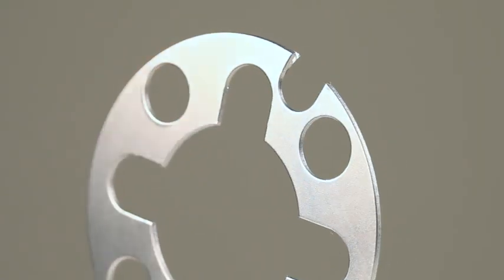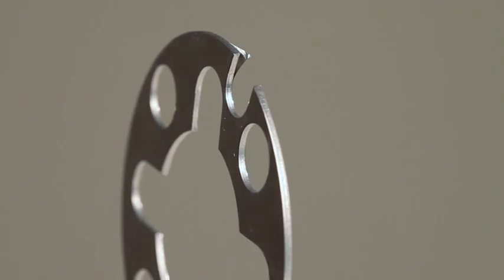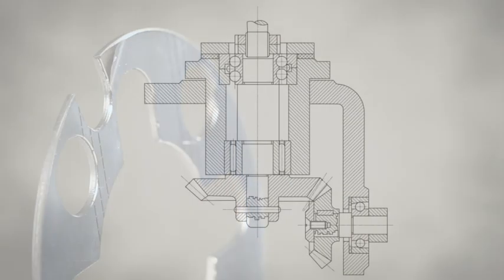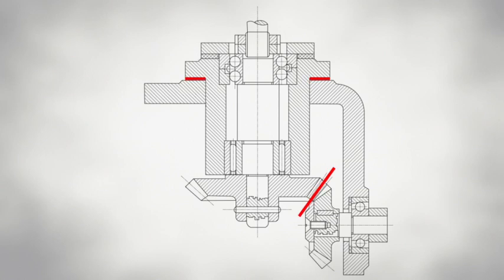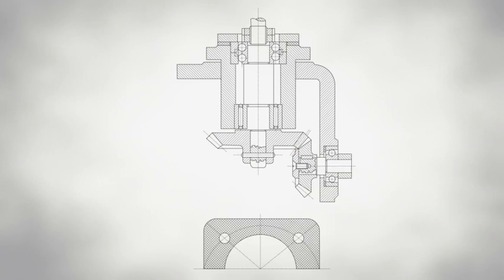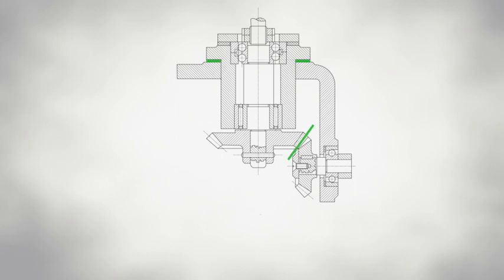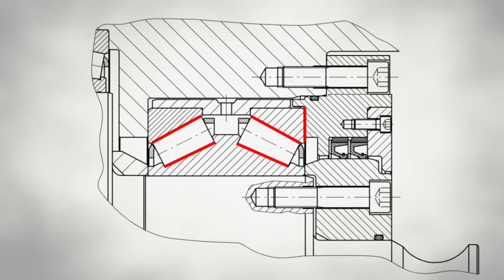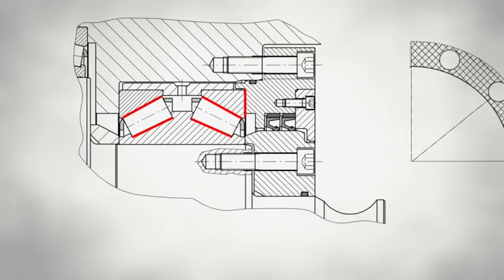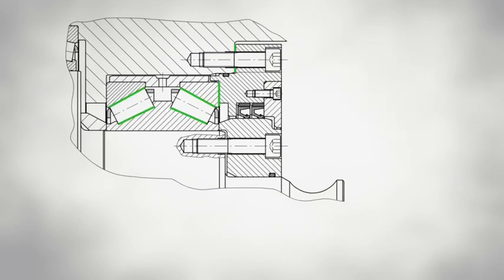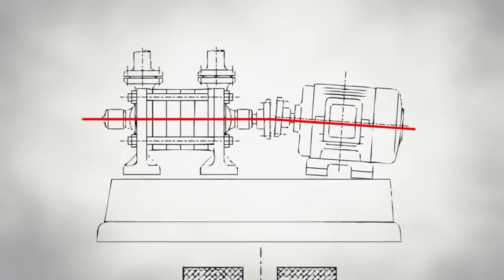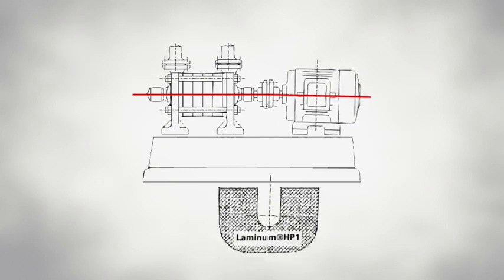Laminum HP1 is available in standard thicknesses of 0.5 to 3 millimeters. It is perfectly suited for the alignment of transmission components, the adjustment of tapered roller bearings, and compensation of the height difference between motors and pumps.